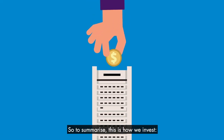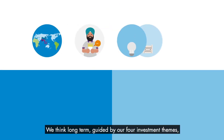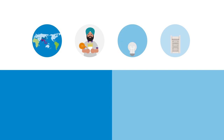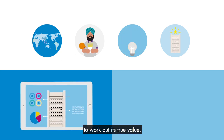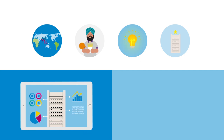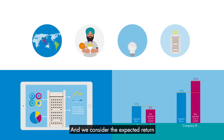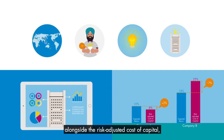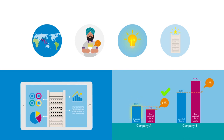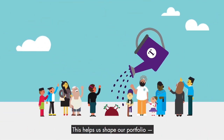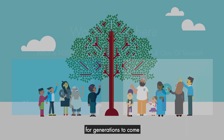So to summarize, this is how we invest. We think long-term, guided by our four investment themes. We study a company's fundamentals and understand its risks to work out its true value. And we consider the expected return alongside the risk-adjusted cost of capital to determine if an investment is attractive. This helps us shape our portfolio for generations to come.